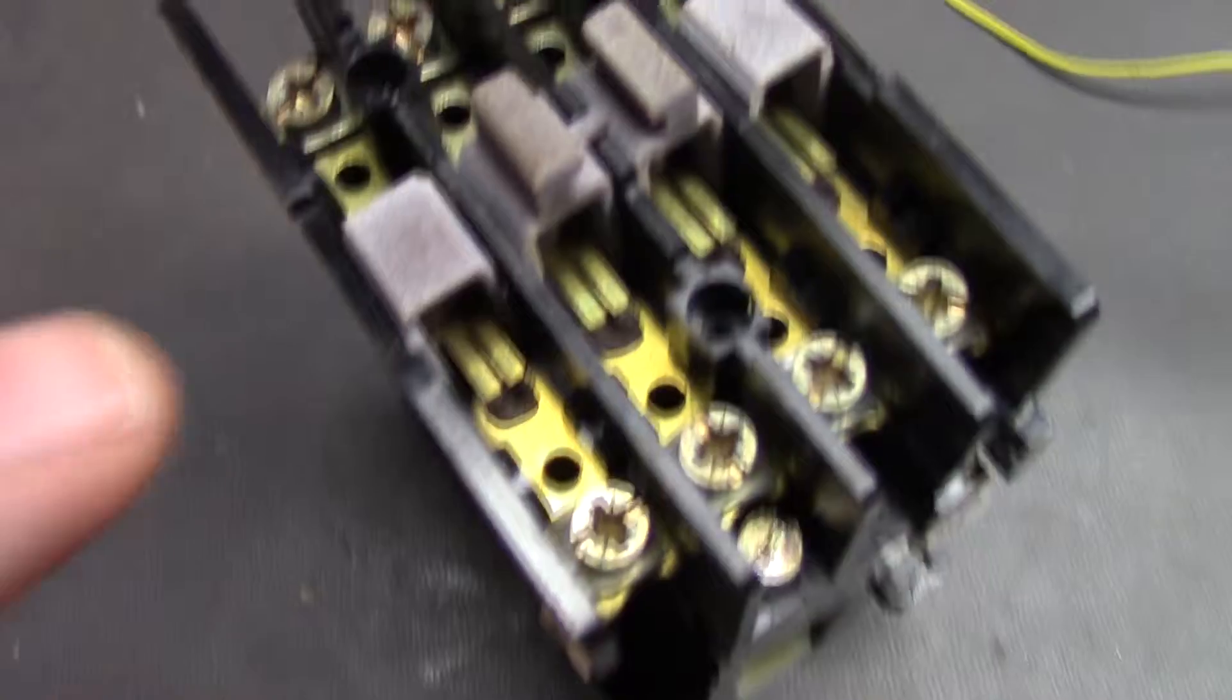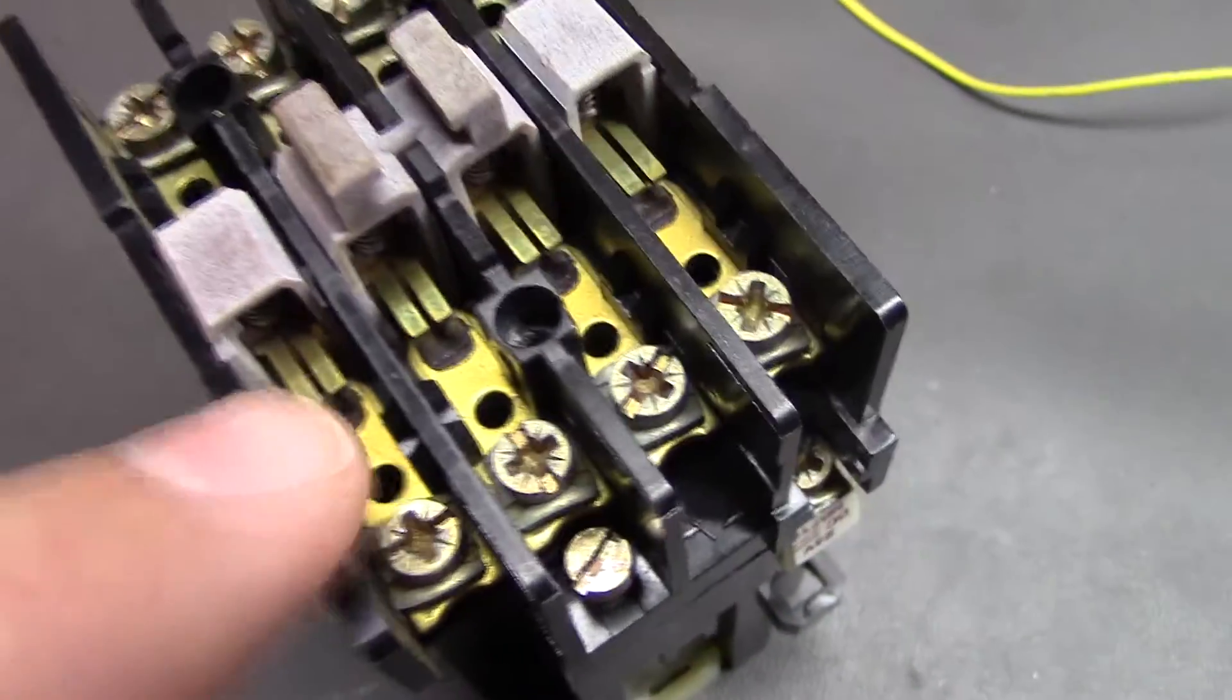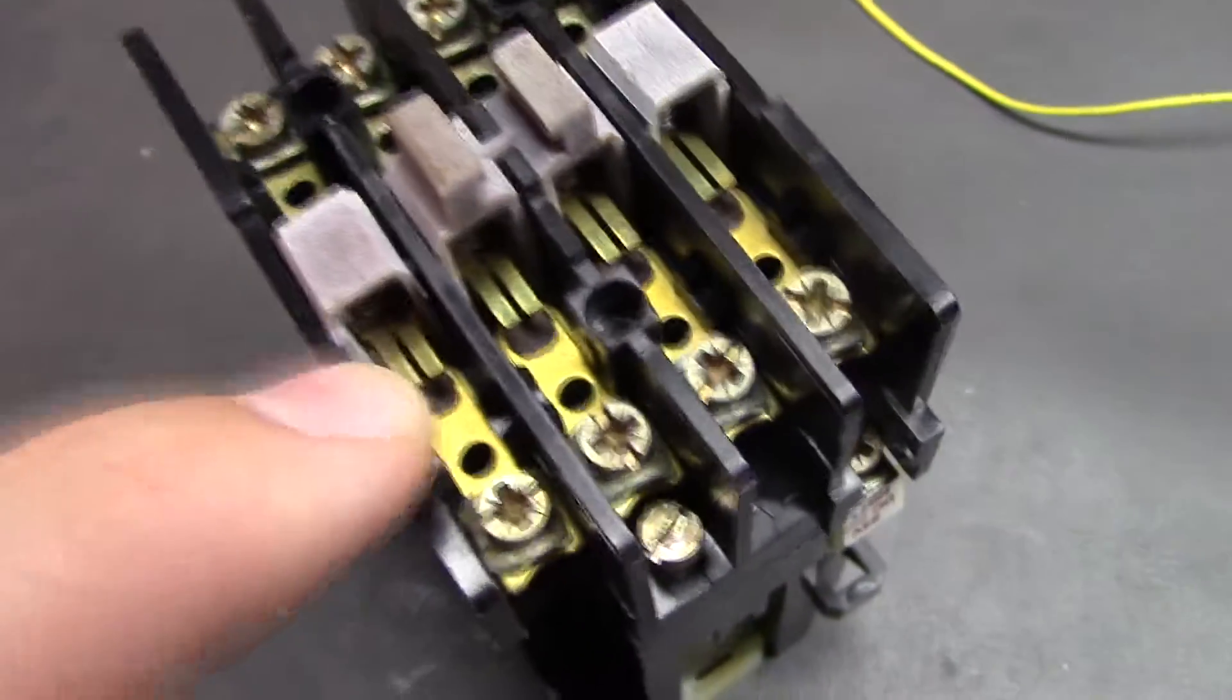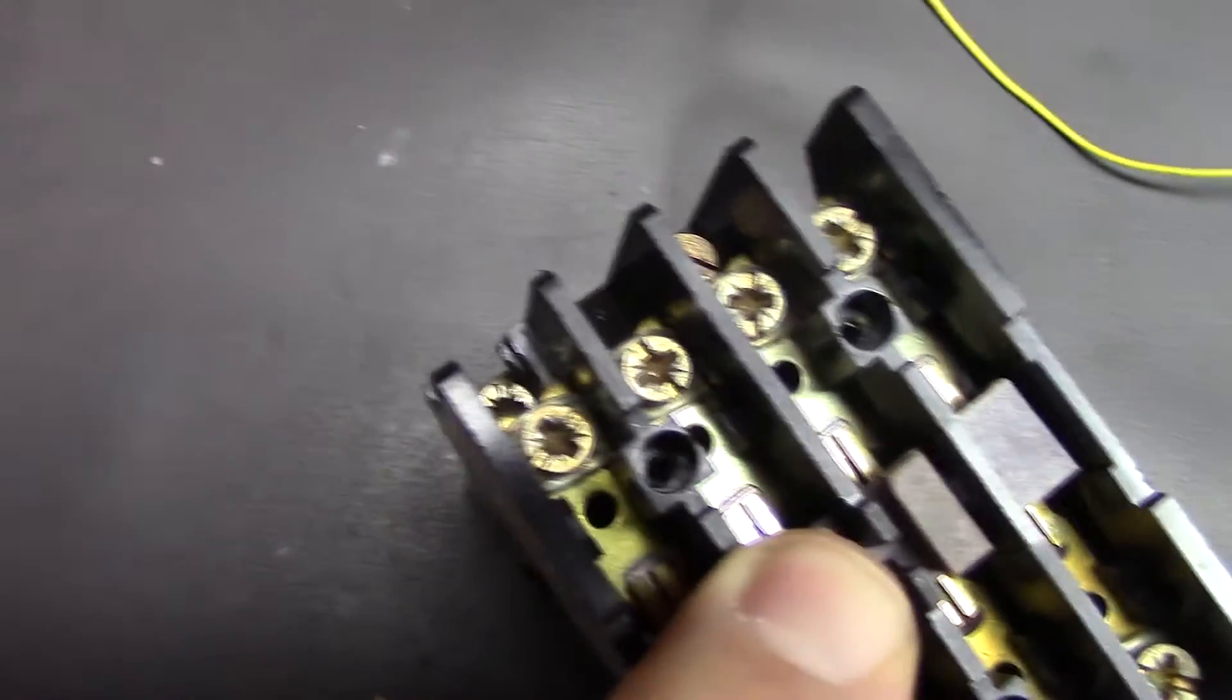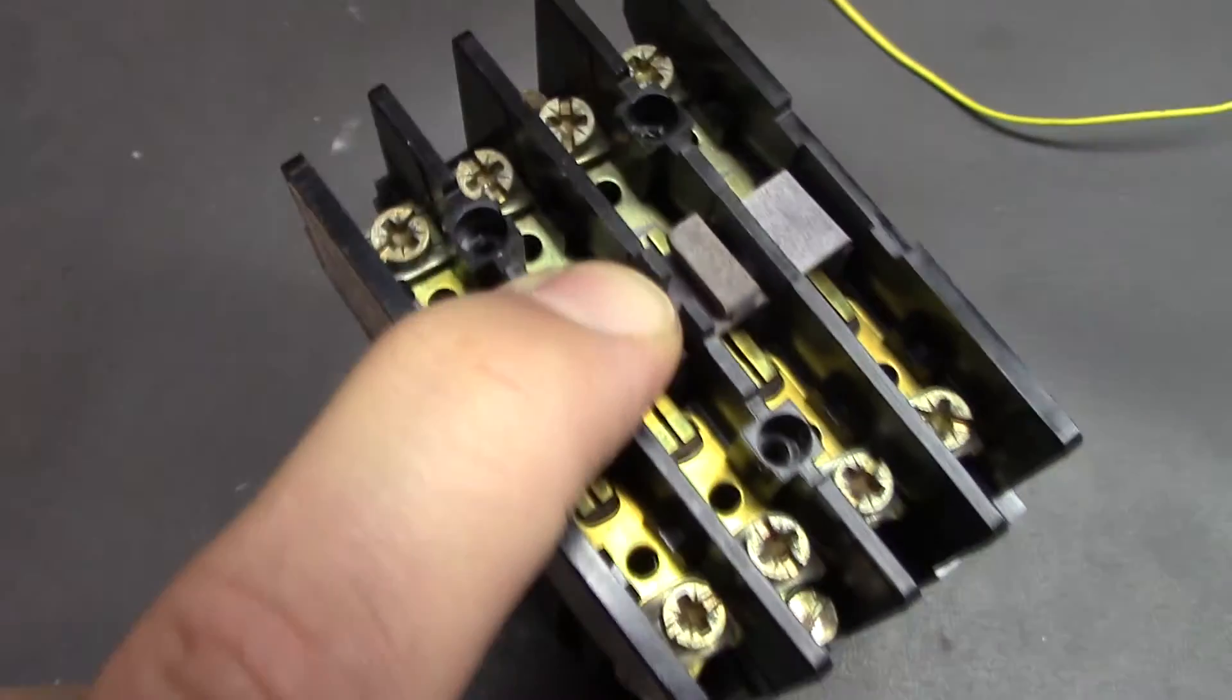And then inside, you can see we have our four channels here. And in between each one of them, you've got these little fingers, and then they've got a little contact pad there. So when that coil is energized, it just draws this down, and then on both sides, it connects and the current can flow. Very simple.